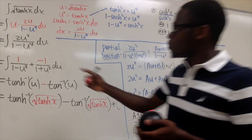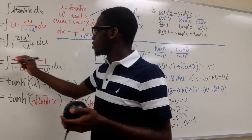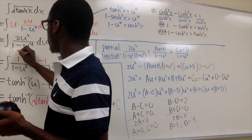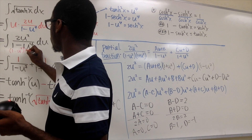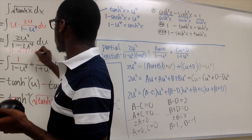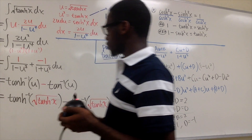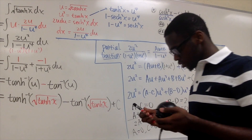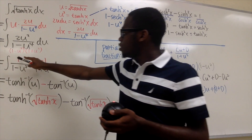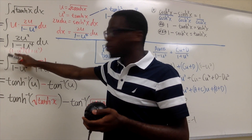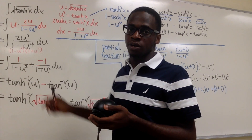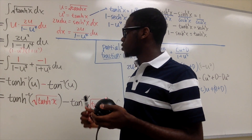Now we want to factor the denominator: 1 − u⁴ = (1 − u²)(1 + u²). Be aware that you could still factor 1 − u² further, but trust me — if you stop here, it's quicker for this situation.